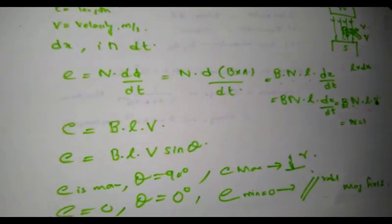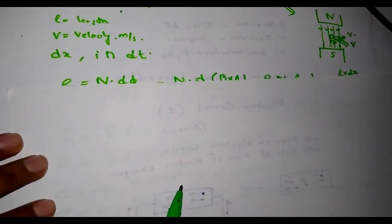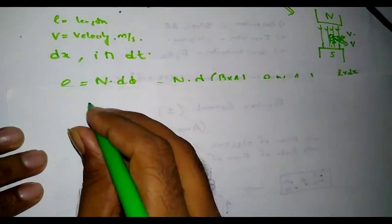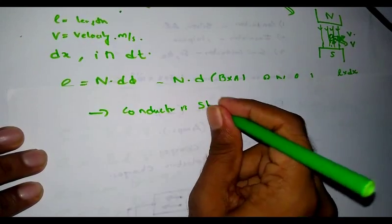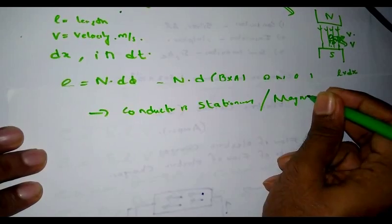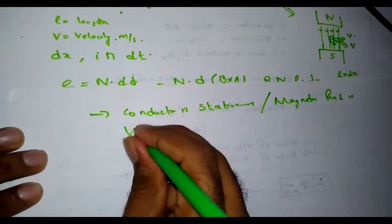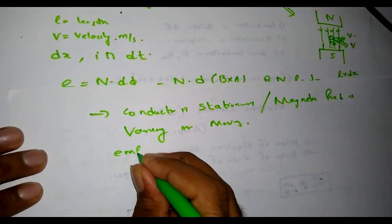Next, let us go through statically induced EMF. As described, dynamically induced EMF is one where the conductor is moved and the magnetic field is stationary. Similarly, statically induced EMF is just the opposite — in statically induced EMF, the conductor is stationary and the magnetic field is varying or moving. Such an EMF induced is known as statically induced EMF.